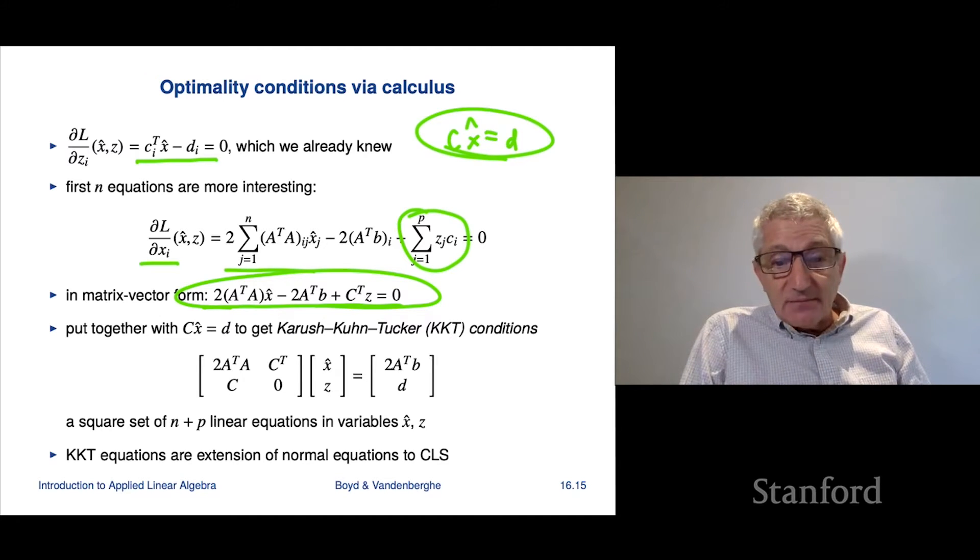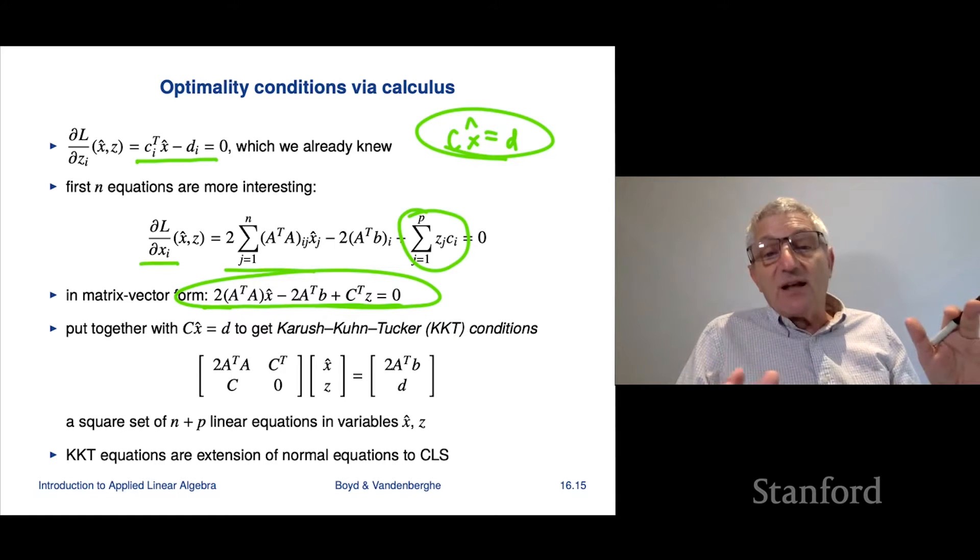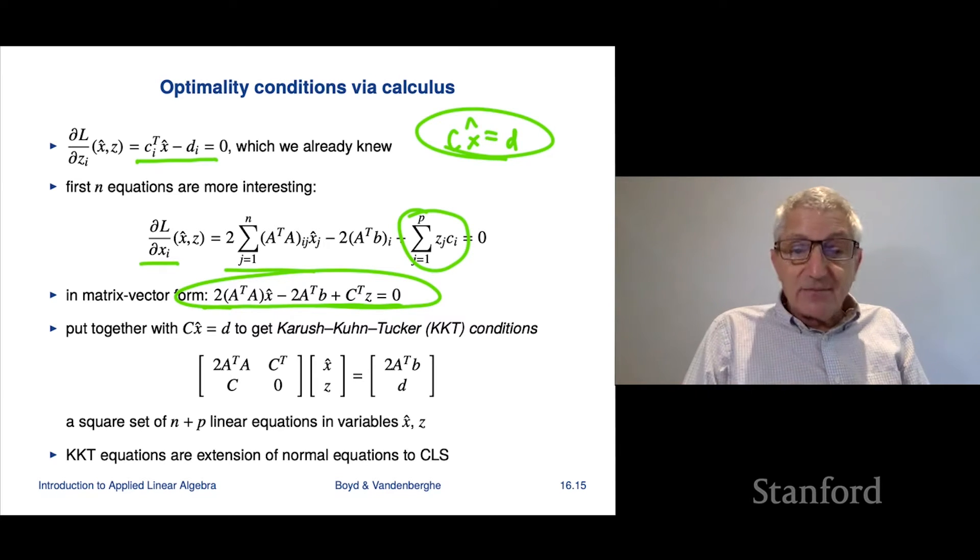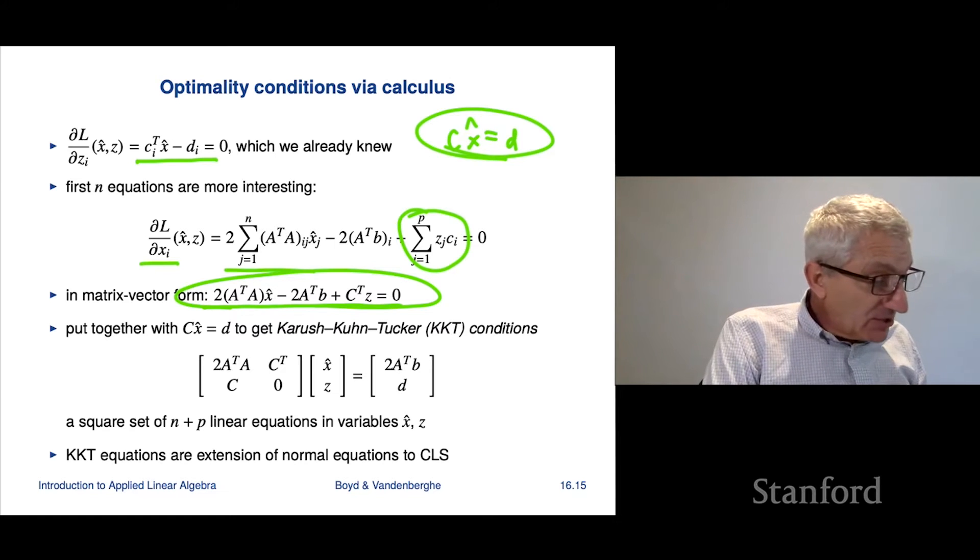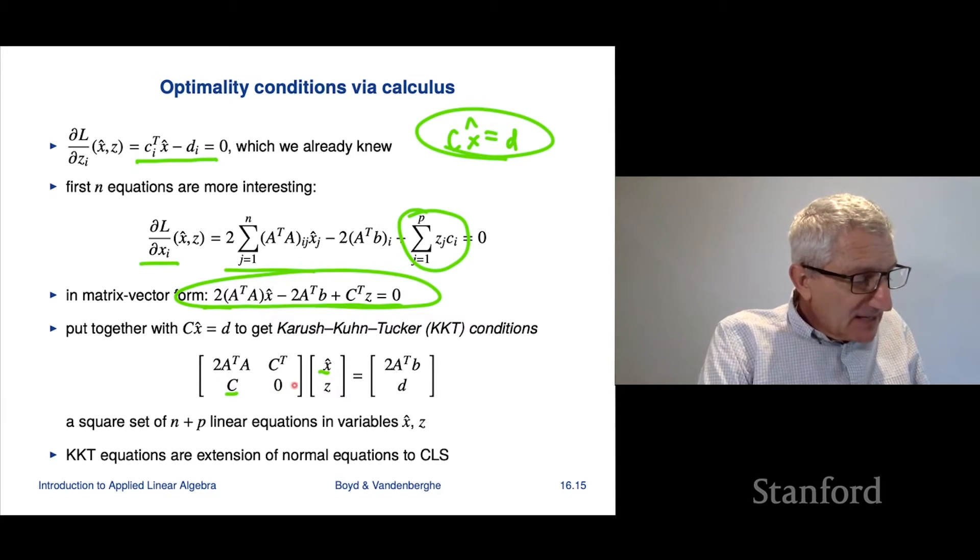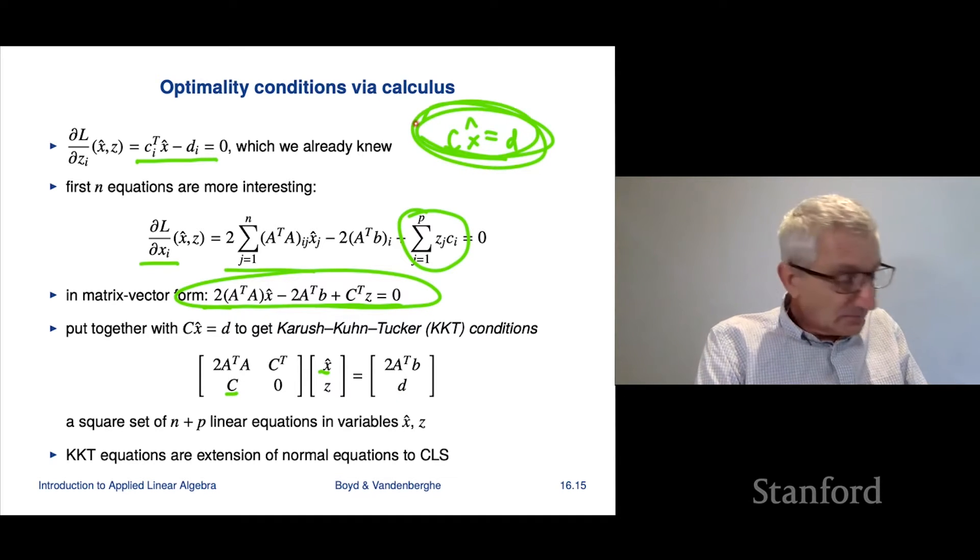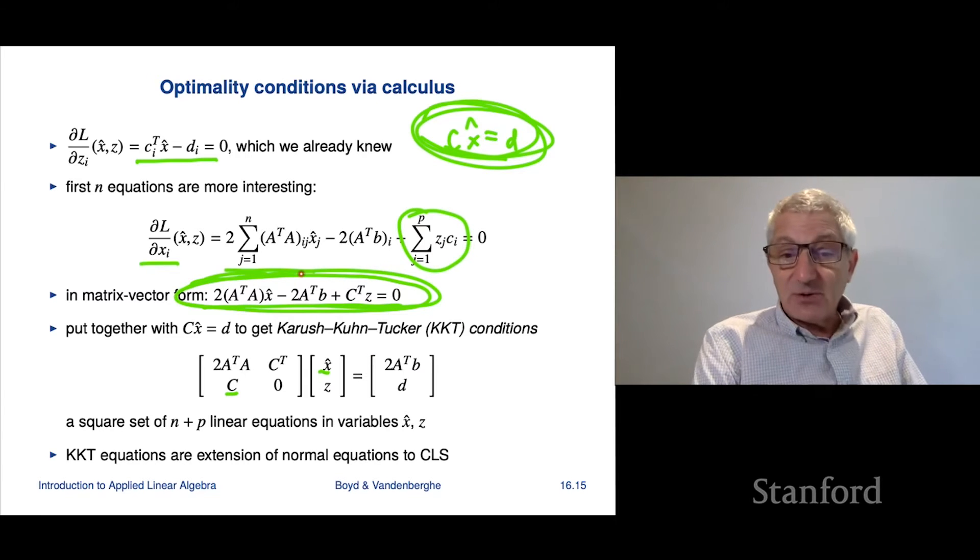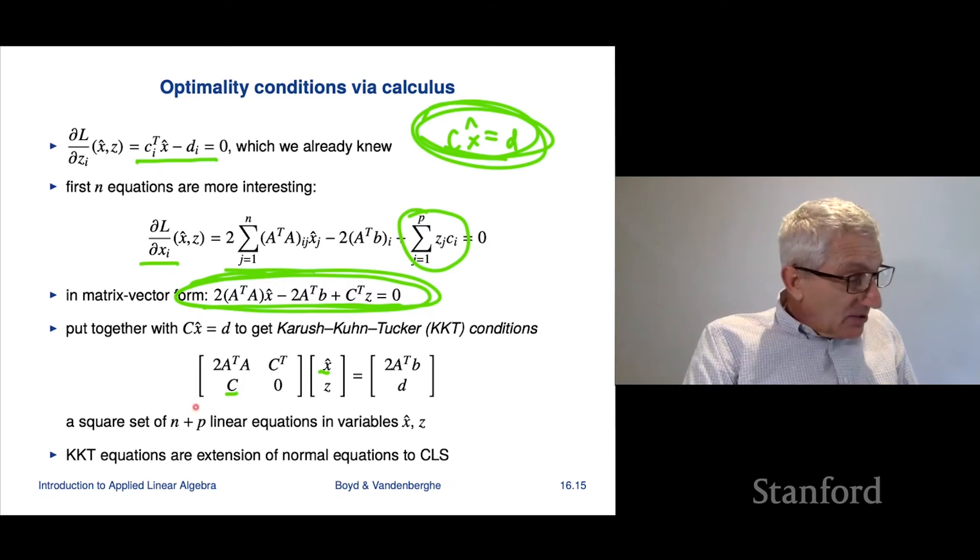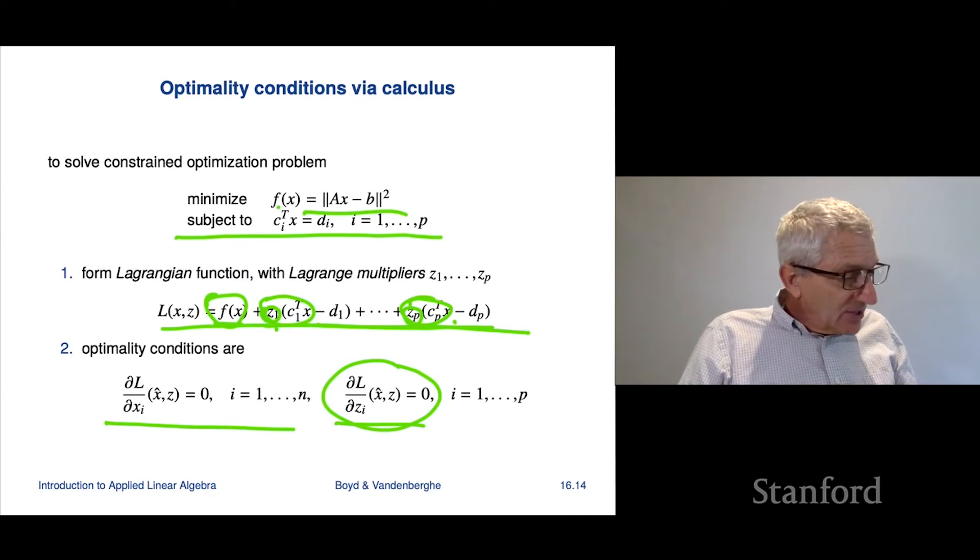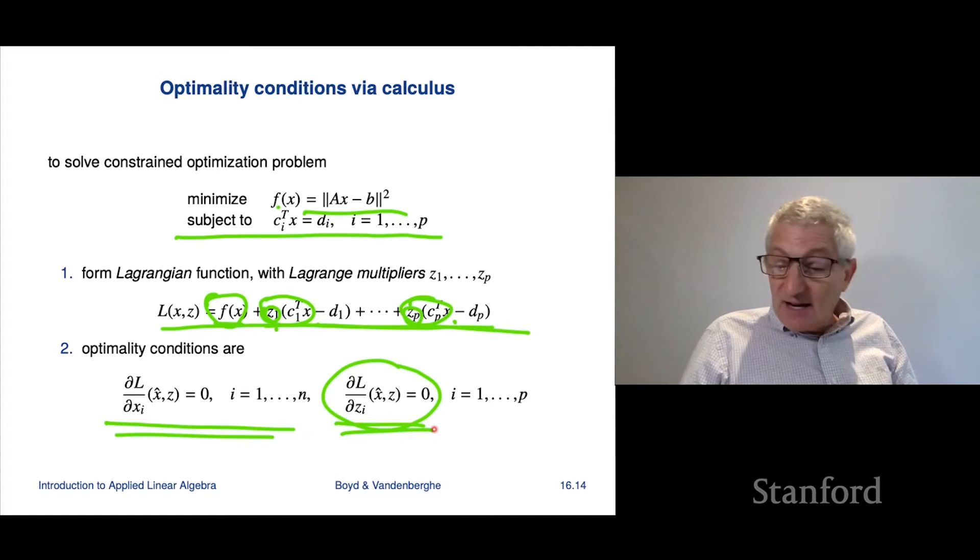So this one I can write as C x hat equals d. And this one I write this way. And now what I'm going to do is I'm going to collect this system of equations, this set of equations, and I'm going to collect them into one big equation for both variables, the x hat and the z. Now, the truth is we don't care about the z. I mean in some applications, you do care about the z, but that's beyond the scope of this course. We don't care about z. So z is just something you have to calculate in order to get x hat. So that's fine. So what we'll do is we'll calculate x hat and z, and then we'll just throw away z and use x hat.